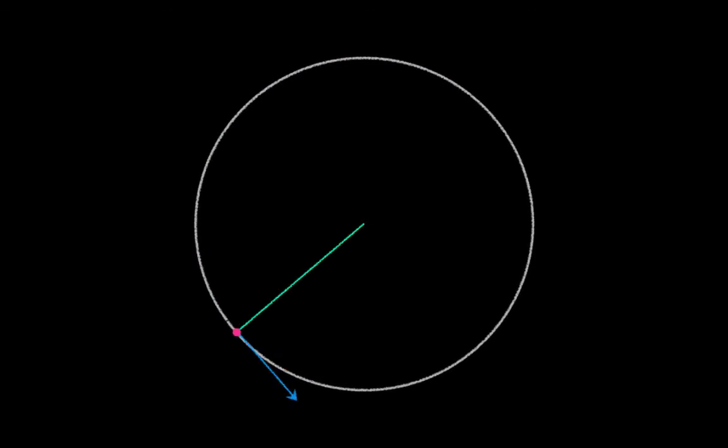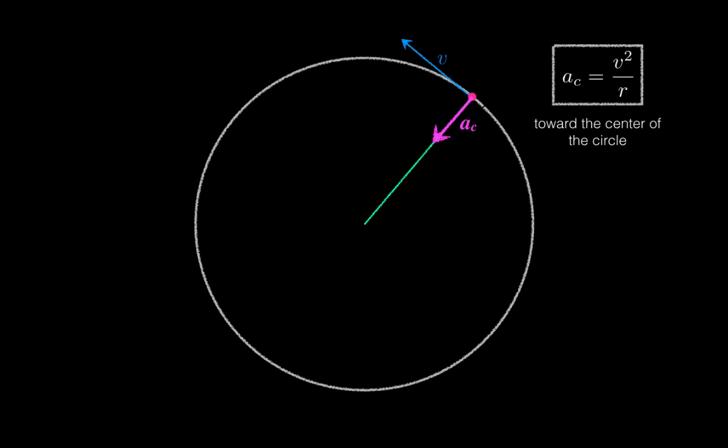To recap, whenever an object moves in a circle with constant speed, it is accelerating. The centripetal acceleration points toward the center of the circle, and the magnitude is v squared over r. Students often get tricked into thinking that a particle in uniform circular motion is not accelerating, so be sure to remember this result each time you encounter circular motion.